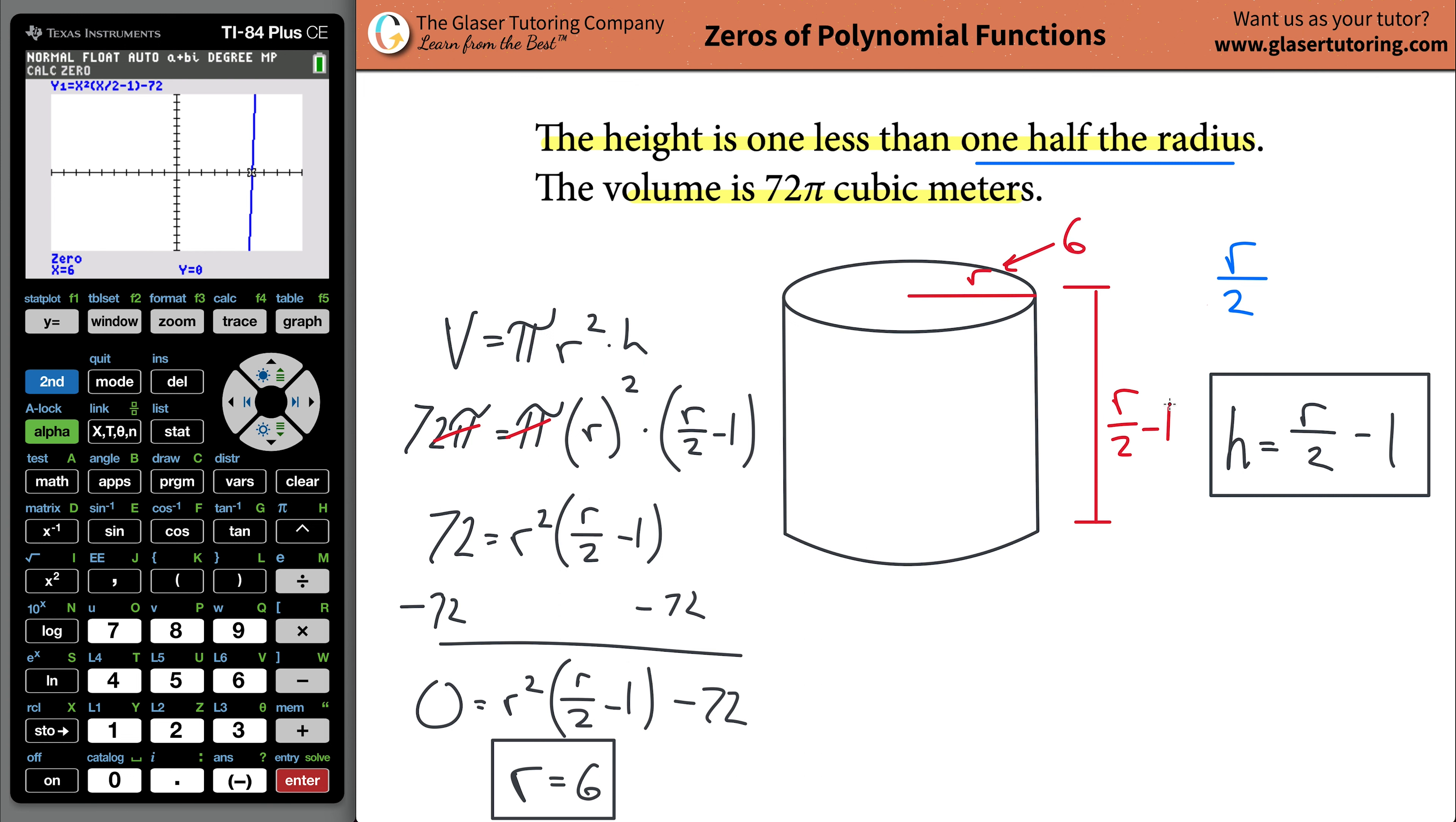Now, if the radius is six and the height is one less than half of the radius, what is then the height? It would be six over two, which is three, minus one, which would be a value of two. So radius is six, height is two.